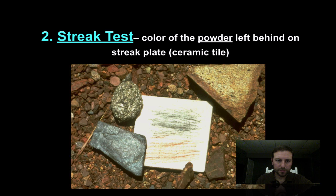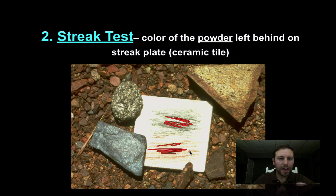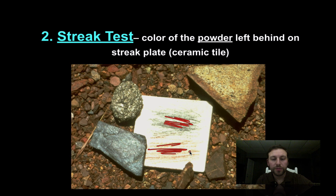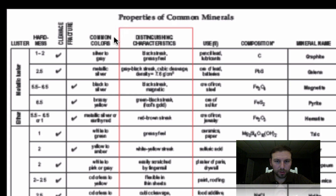The streak test is definitely a little bit better. Certain minerals will leave behind a residue on a streak plate — a ceramic tile — that helps us identify it. When scratched, minerals leave marks behind, and that color is kind of like a signature for each different mineral. Some minerals will have a similar color streak, but it's another tool in our bag of tricks. We can find streak in our distinguishing characteristics column. For example, hematite gives a red-brown streak.